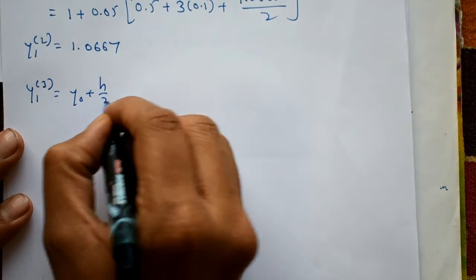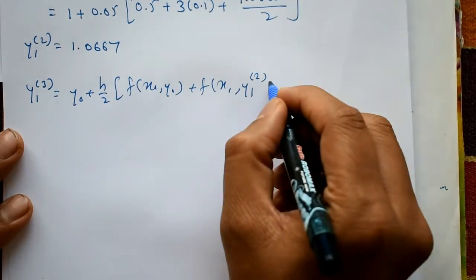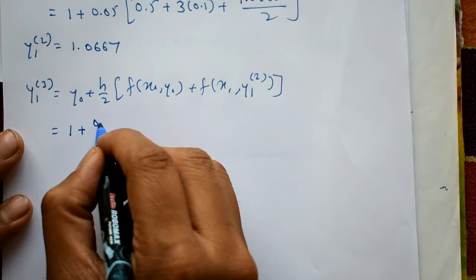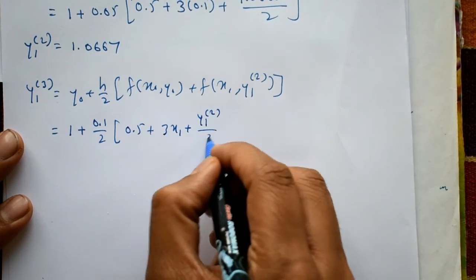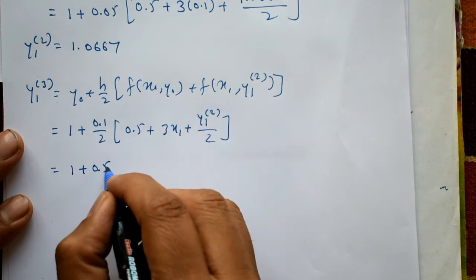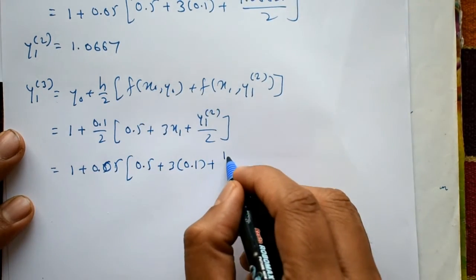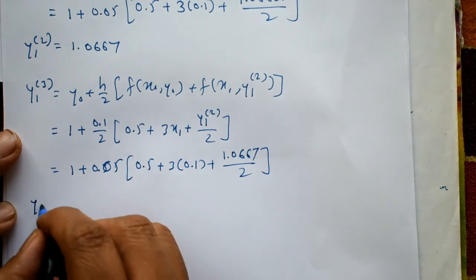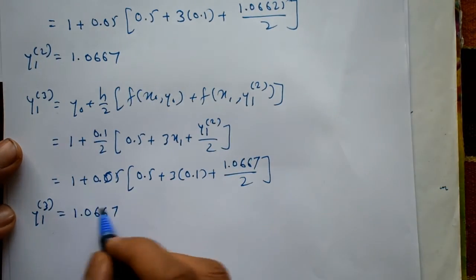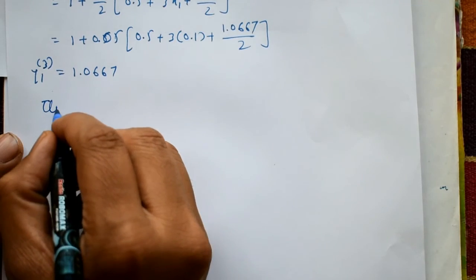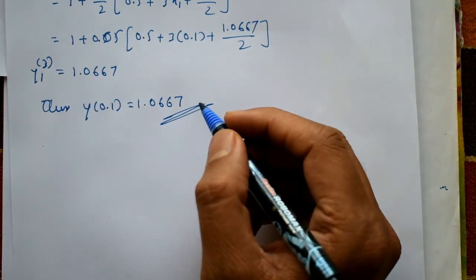Next iteration: y1³ = y0 + (h/2)[f(x0, y0) + f(x1, y1²)]. Substituting: 1 + 0.05 × (0.5 + 3(0.1) + 1.0667/2). Using a calculator, we get y1³ = 1.0667. Since y1² and y1³ are the same, we stop the iteration. Thus the required value is y(0.1) = 1.0667. Please subscribe to my channel and like.